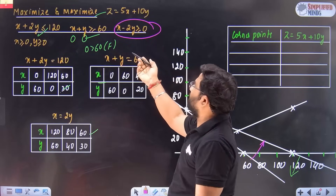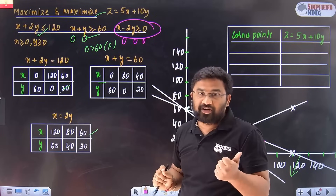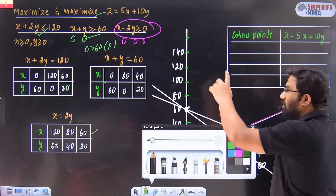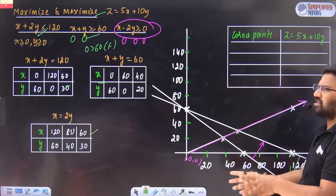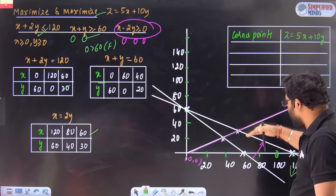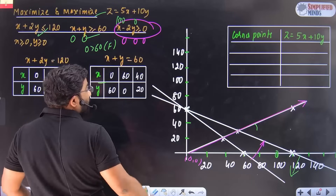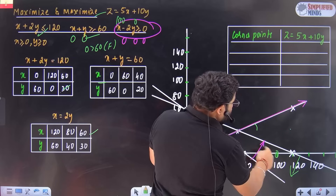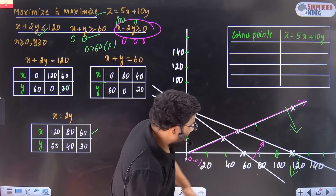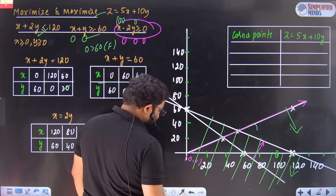When a line passes through the origin you cannot use (0, 0) to check — take any other point, for example (100, 0). Substitute (100, 0) into the constraint. If it satisfies — it is true — then the feasible region should contain (100, 0), so shade towards that point. If you take a point below the line and it satisfies, shade downwards; if not, shade upwards. The common region for all constraints is your feasible region.